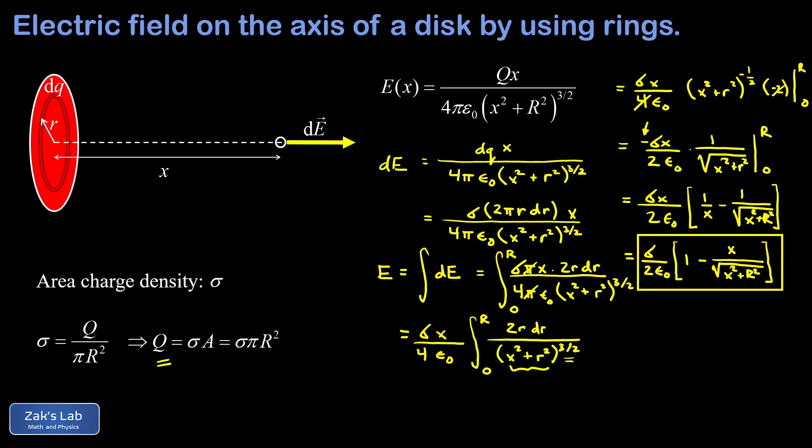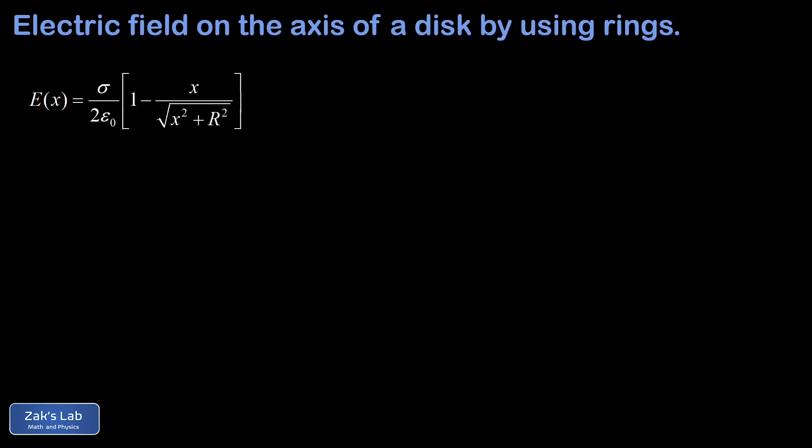So that's the total electric field at a distance x from the uniformly charged disk, measured on the disk axis. Now that we have this result, we want to investigate a couple of limiting cases to make sure the formula is behaving correctly.